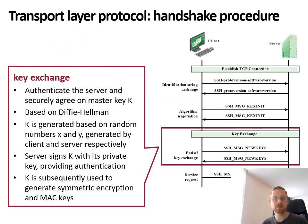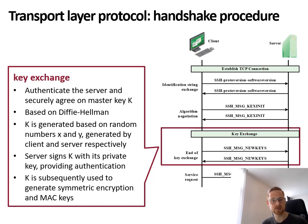The client and the server agree on a master key K using the Diffie-Hellman algorithm. Basically, they generate random numbers, and based on those random numbers and their own public and private keys, they can both generate the same key K. The server then signs the key with its own private key to provide authentication, and using a certificate, the client can then verify that the server is indeed who they claim to be.